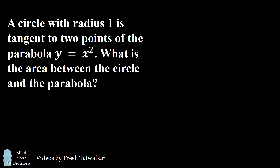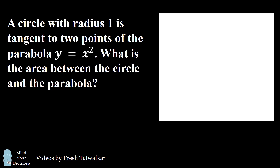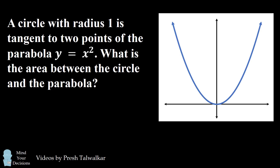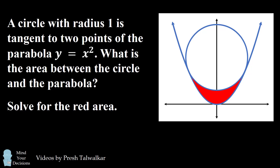Hey, this is Presh Talwalkar. A circle with radius 1 is tangent to two points of the parabola y equals x squared. What is the area between the circle and the parabola? Here's a diagram to illustrate the problem. We have the parabola y equals x squared, and then we have a circle of radius 1 that's tangent to the parabola at two points. The question is what's the area highlighted in red in between the circle and the parabola?